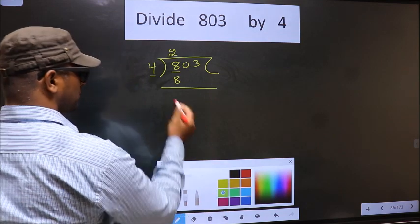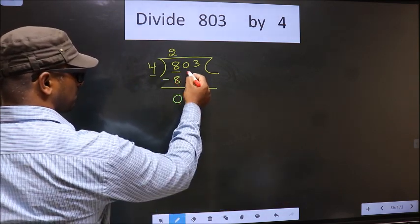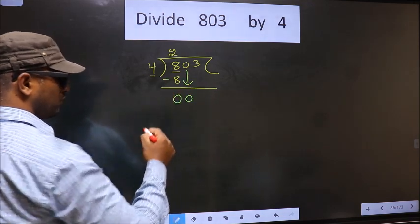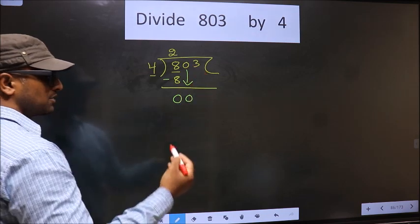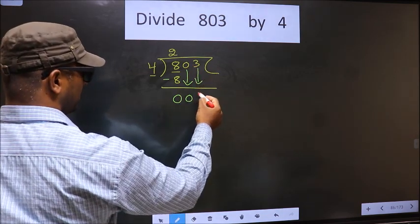Now you subtract: 8 minus 8 is 0. Now you bring down the next number, 0. 0 is smaller than 4, so what we should do is we should bring down the next number, 3, down.